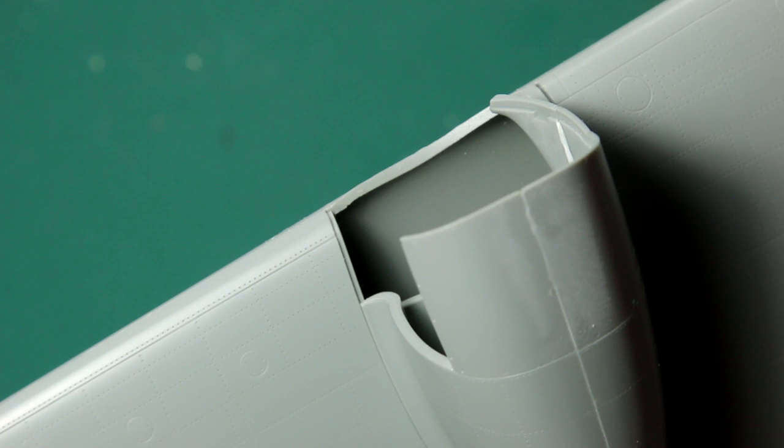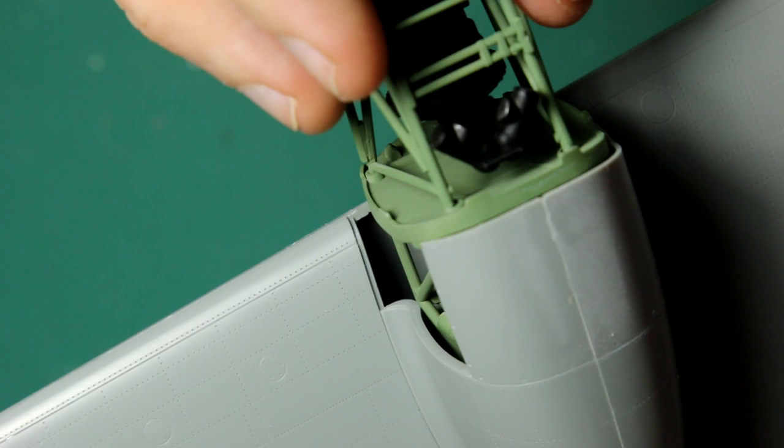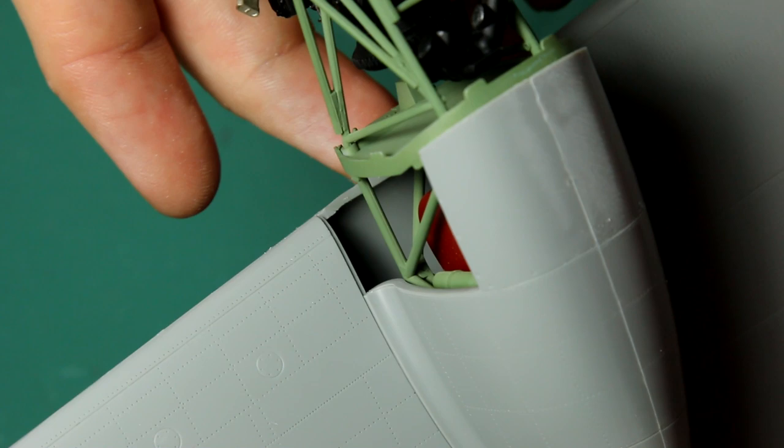And here is the starboard wing. This is engine number four, and you can see the modified engine casing I've got. The engine will slot inside. Before I do that, I need to paint inside there with an interior green.